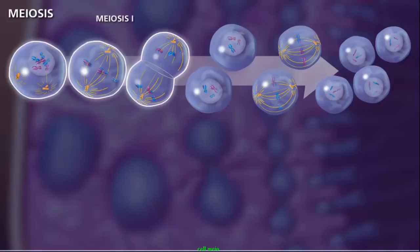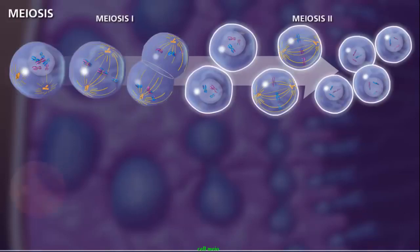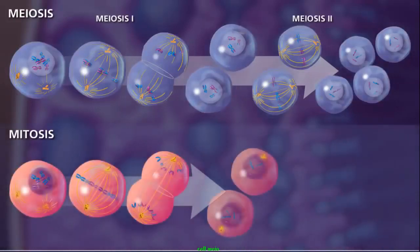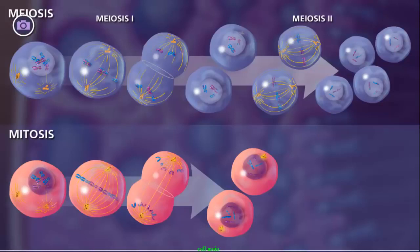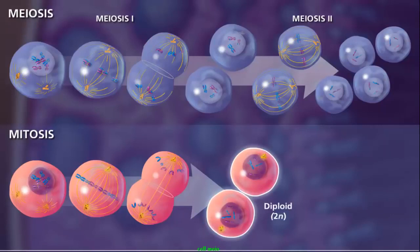These divisions are termed meiosis I and meiosis II. Although the processes of mitosis and meiosis look similar, there are a few major differences. One obvious difference is that mitosis results in two diploid daughter cells, and meiosis results in four haploid cells.